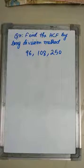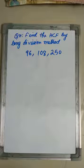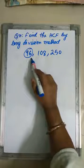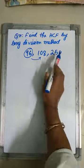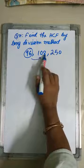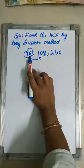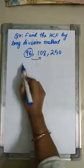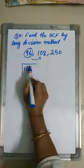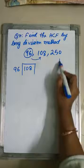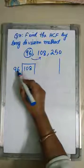I am going to show you how to find the HCF by long division method when there are three numbers. The numbers are 96, 108, and 250. I shall begin with the smallest number 96. So I will divide 108 by 96.